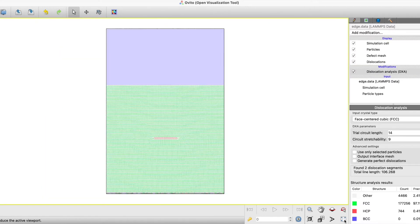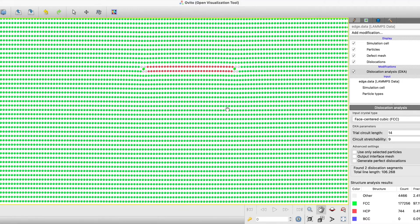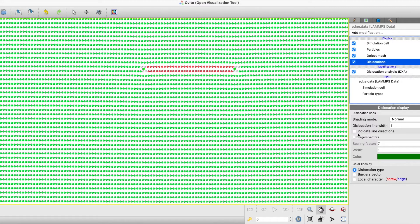Now I will zoom in the left perspective and I will increase the dislocation line width by 4 times and you can clearly see the dislocation present in the structure.